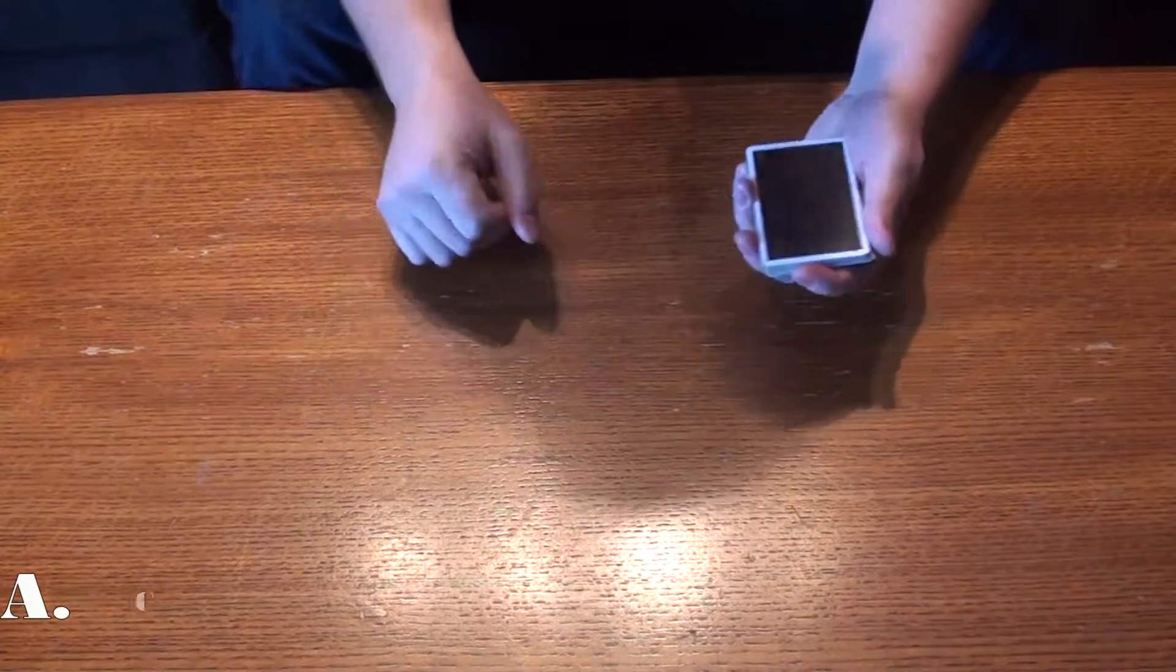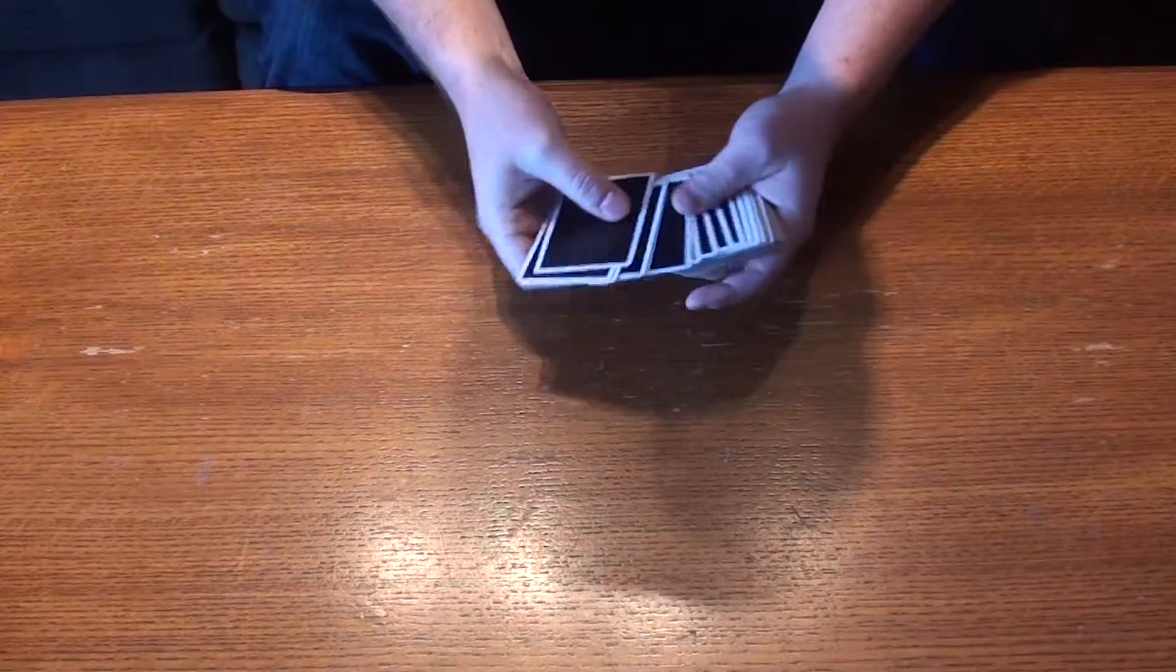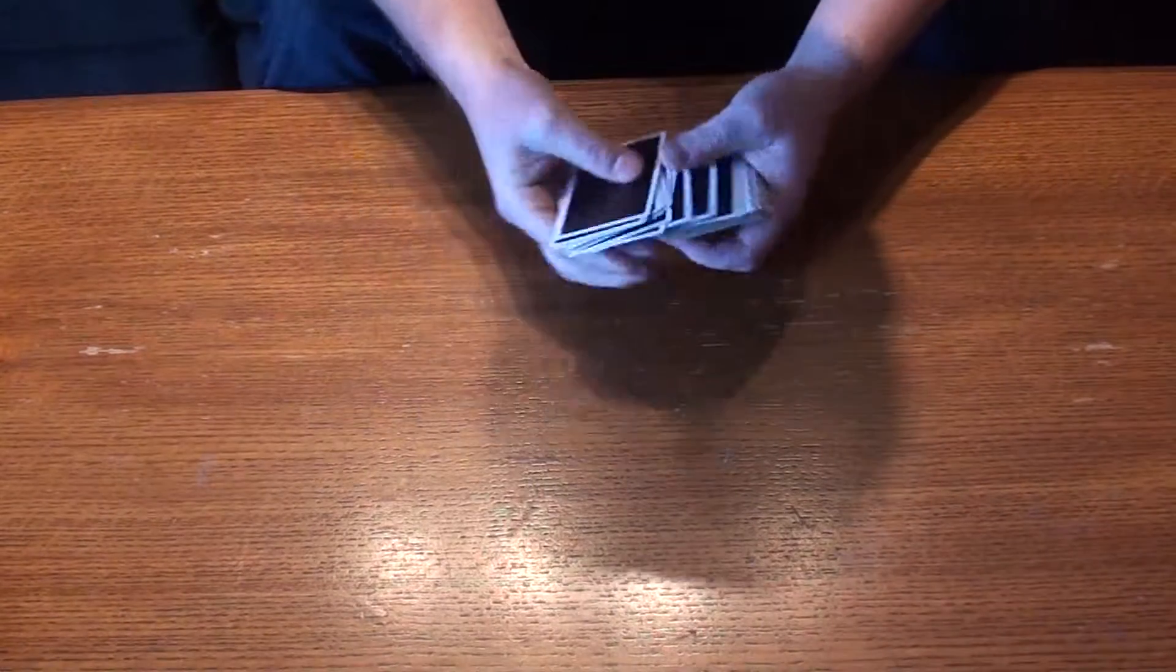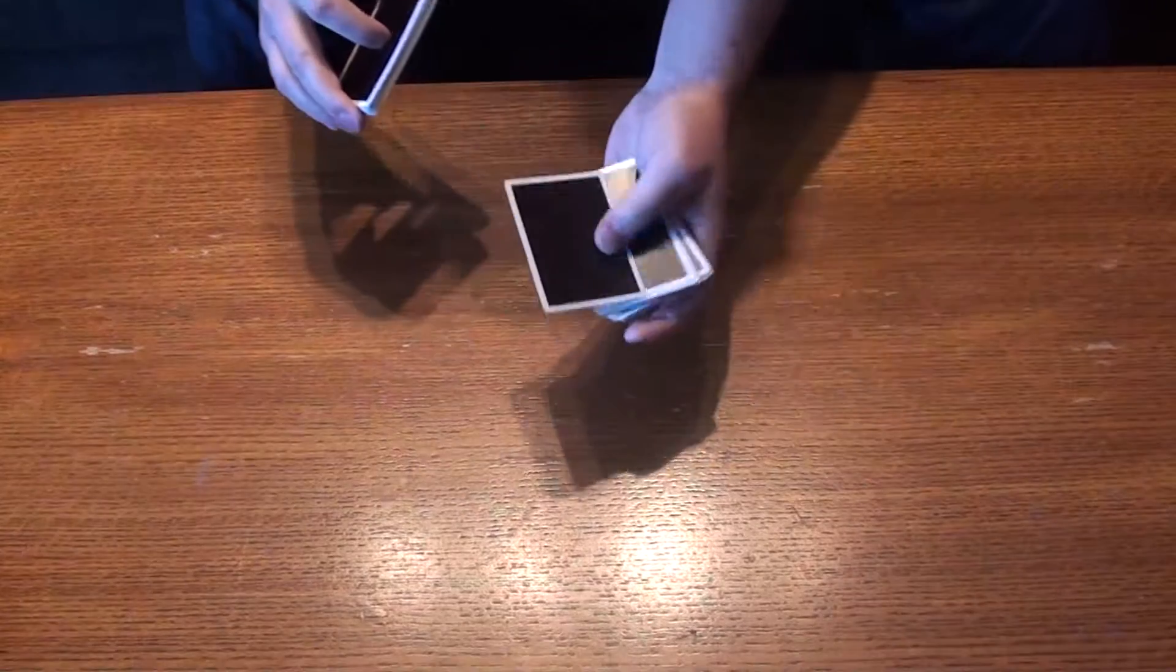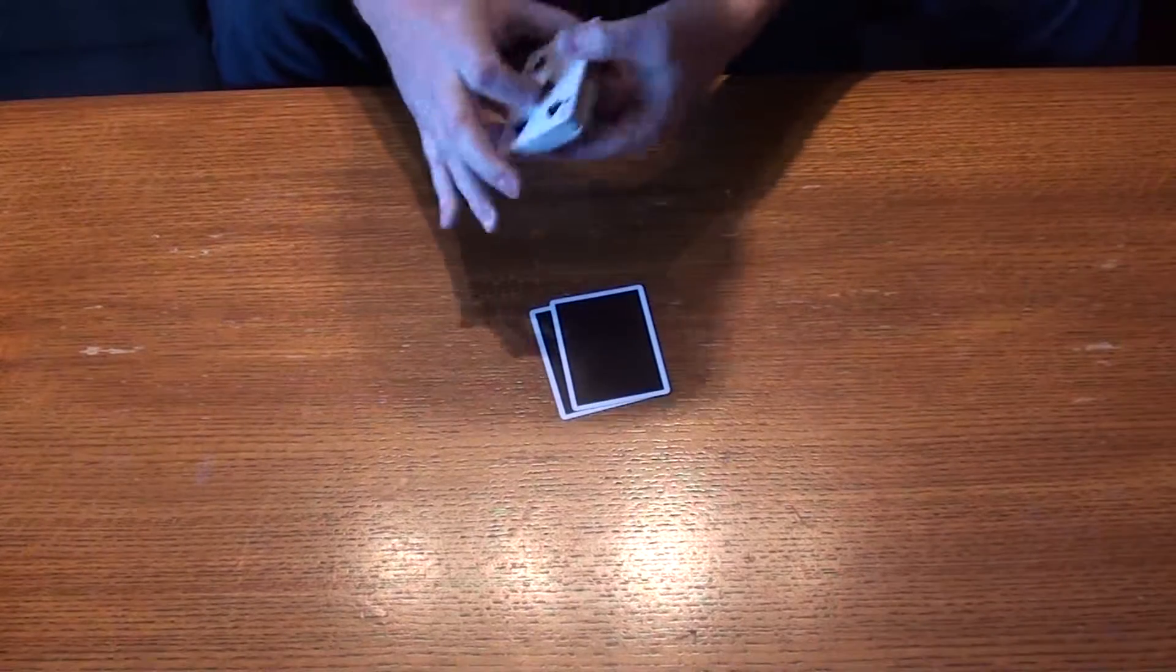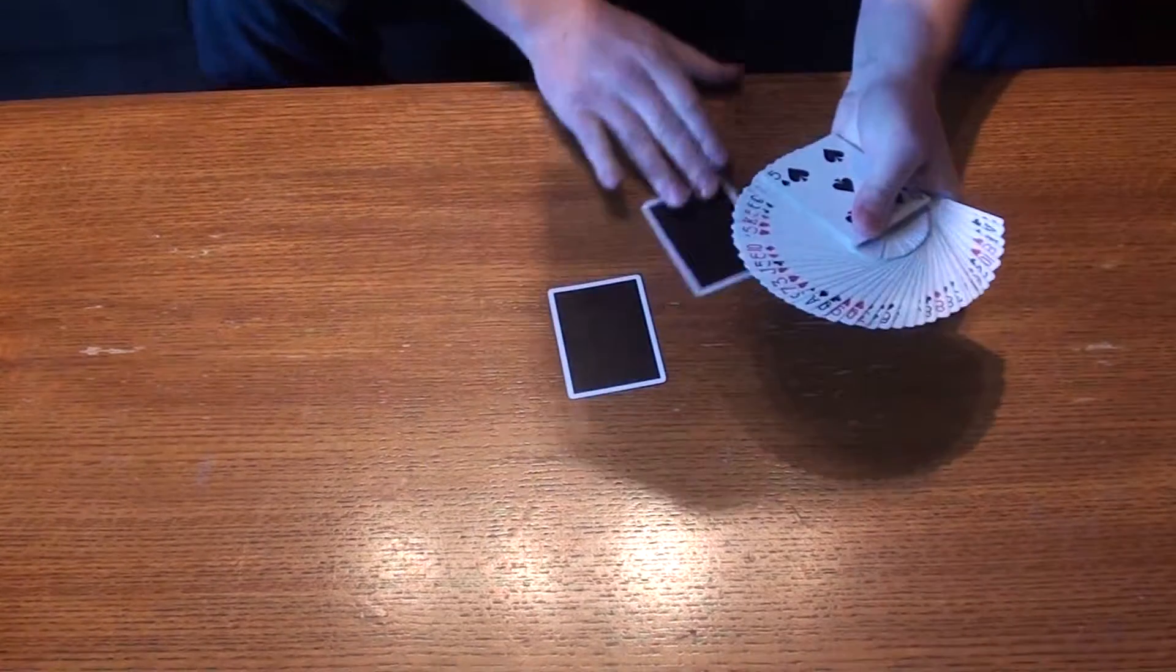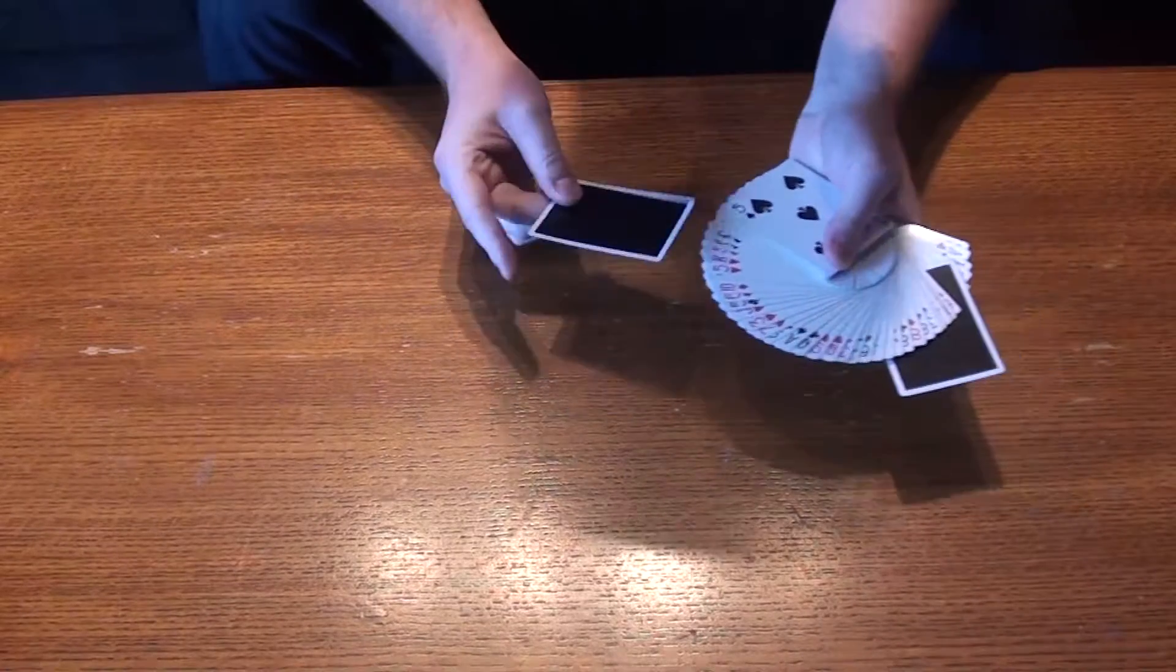This is my variation of any card at any number. Start by showing that the deck is completely normal. We're going to choose two cards and leave them face down in the deck. They're going to be unknown until the end of the trick.